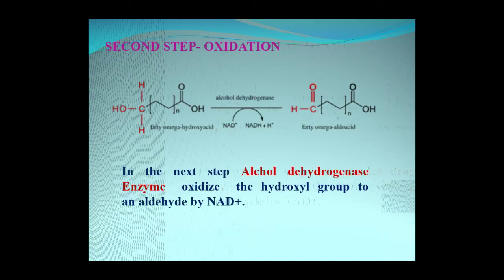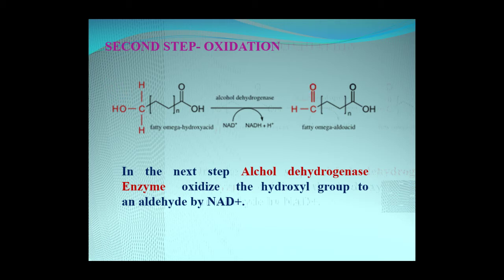In the second step of omega oxidation of fatty acid, oxidation of the hydroxyl group present at the omega carbon occurs. The enzyme alcohol dehydrogenase oxidizes this hydroxyl group to an aldehyde using NAD+. As a result, an aldehyde group is formed at this omega carbon.